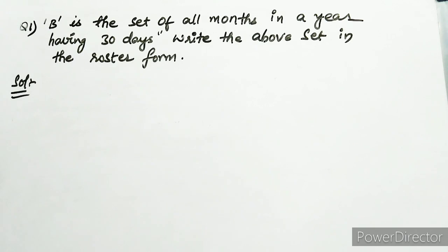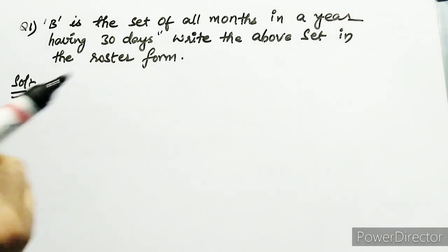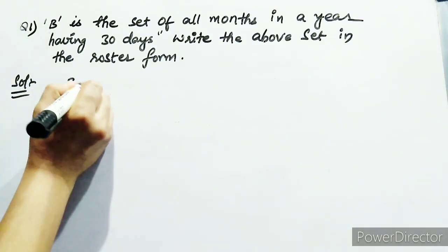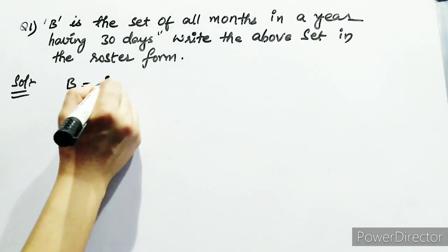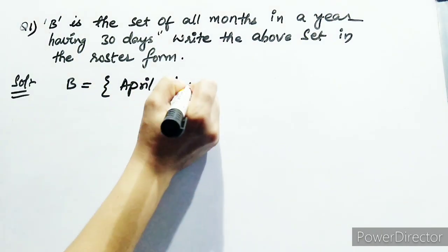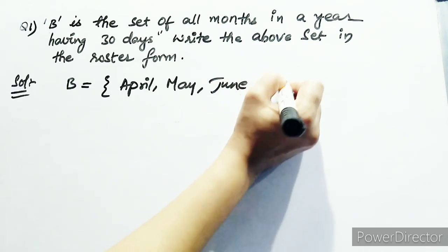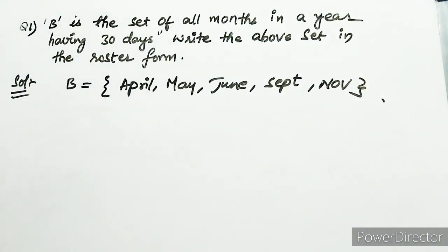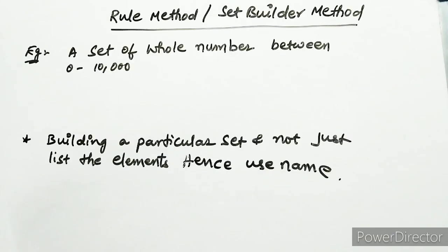Let's do one problem related to the roster method. B is the set of all months in a year having 30 days. We have to write all months that contain only 30 days in roster form. The answer is: B = {April, June, September, November}.